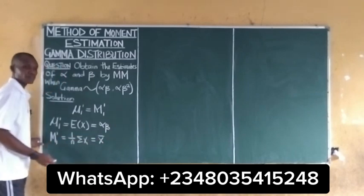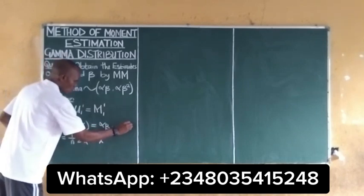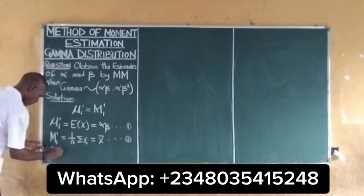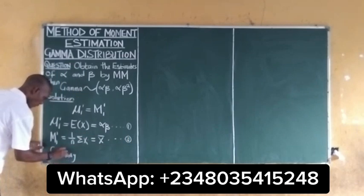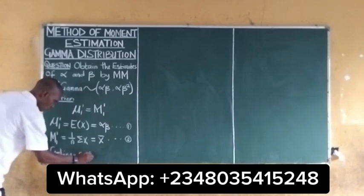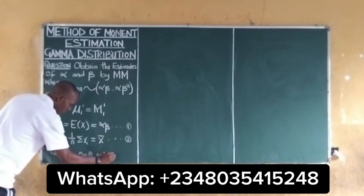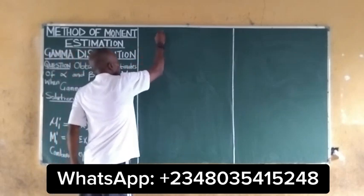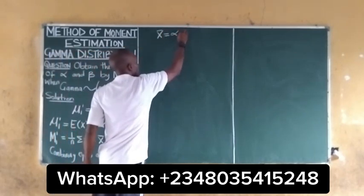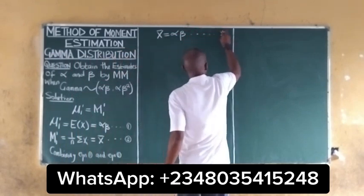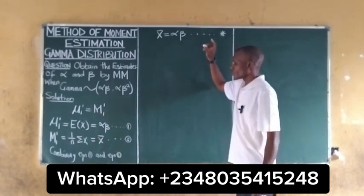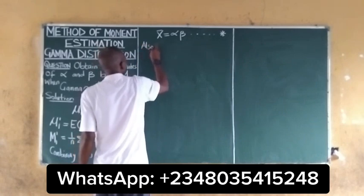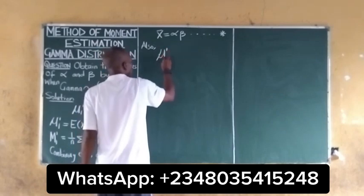Let's take the population mean as equation 1 and the sample mean as equation 2. Combining equation 1 and equation 2, we have that x-bar is equal to alpha times beta. Let's take this as equation star, because we will come back to it.